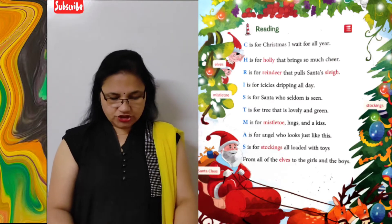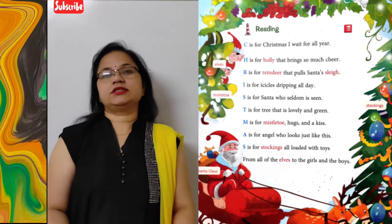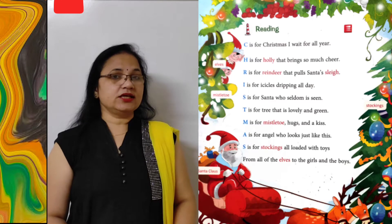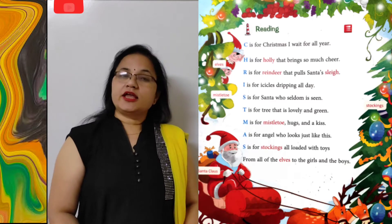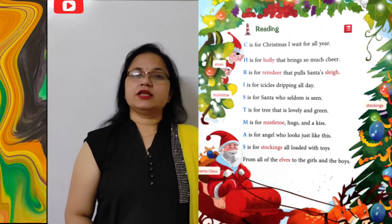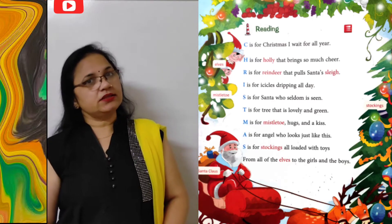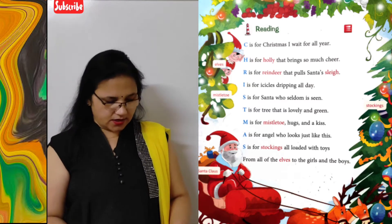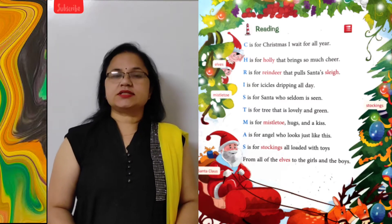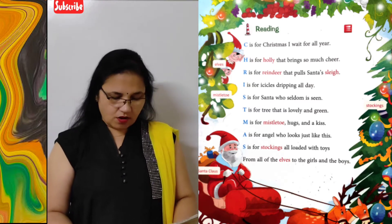A is for angel who looks just like this. A kiske liye hai? Angel ke liye — us farishte ke liye hai jo bilkul isi ki tarah dikhta hai.